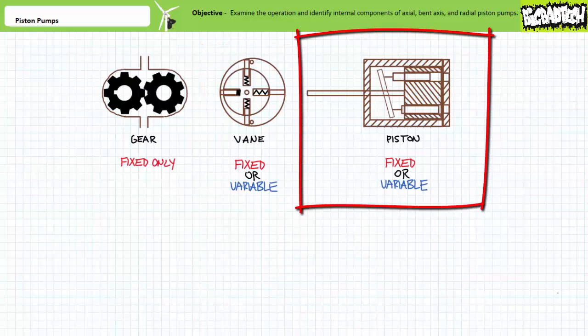A fixed displacement vane pump keeps the relationship between the rotor and cam ring constant, whereas a variable displacement vane pump varies the position of cam ring or rotor to vary displacement per revolution. Piston pumps could either be fixed or variable displacement pumps depending upon construction. A piston pump uses an angled plate to position pistons inside a rotating piston block.